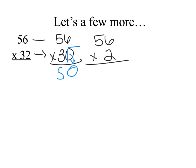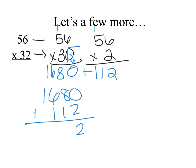3 times 6 is 18. Regroup my 1. 3 times 5 is 15 and 1 more is 16. 56 times 2. 2 times 6 is 12. 2 times 5 is 10 and 1 more is 11. Now I add my two partial products. 1,680 plus 112 gives me a final product of 1,792.